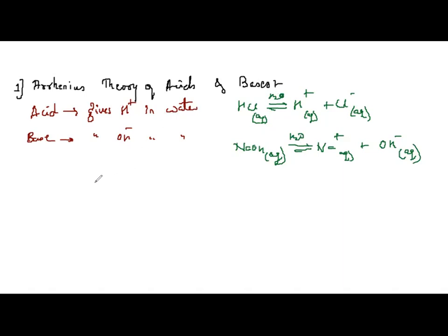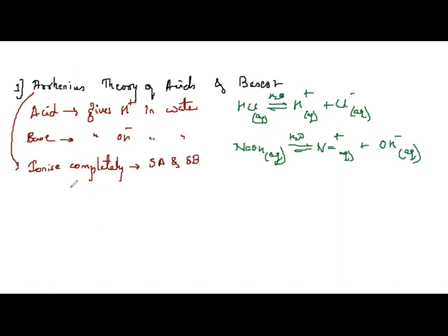Some acids and bases ionize almost completely in aqueous solutions — these are strong acids and bases. Others partially dissociate — these are weak acids and weak bases. The Arrhenius theory was able to explain neutralization reactions and the strength of acids and bases. However, there were limitations, so this theory is not used for complete explanation of acids and bases.